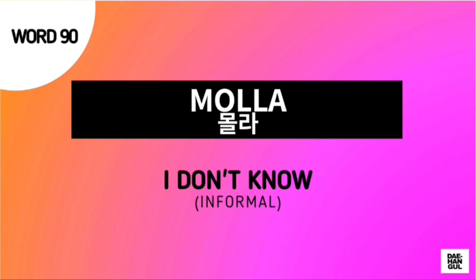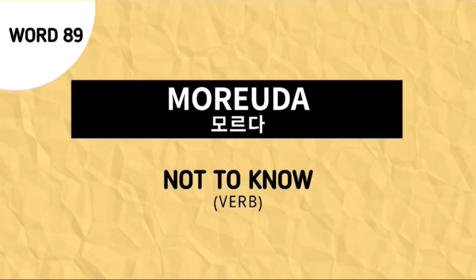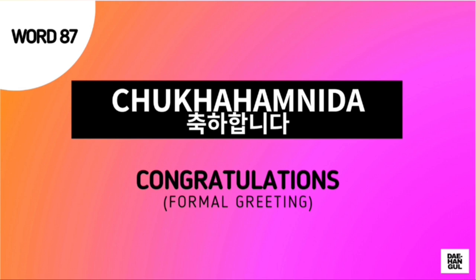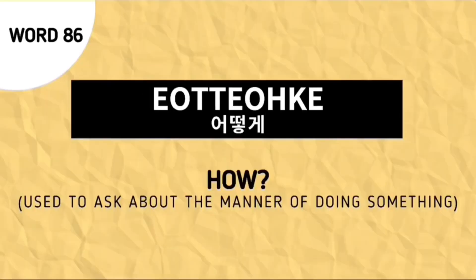Next word is Molla, which is a verb meaning to not know. Next word is Ue, and this is used to ask why. Next word is Chukaamnida, and this is a formal way of saying congratulations. And the last word for our review is Otoke, and this is used to ask how.